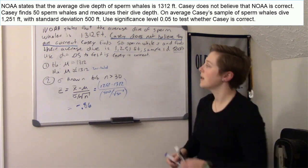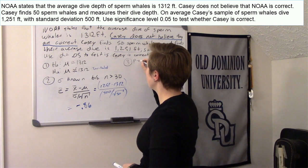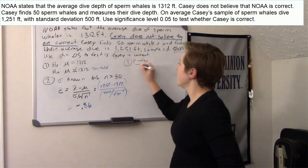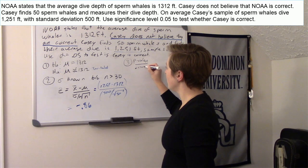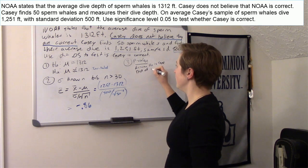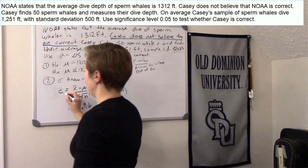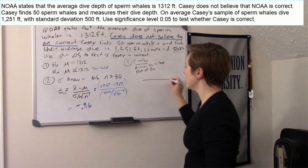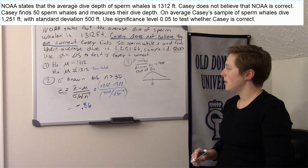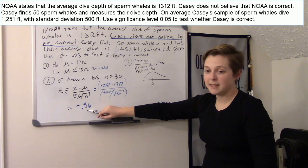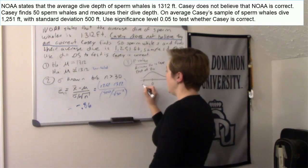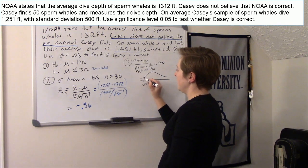Step three: p-value or critical value. I'll start with p-value in this video and do critical value in the next video using the same example. When doing a p-value, you assume H0 is true and look at the distribution of the test statistic, centered at zero. The p-value is the probability of observing a test statistic this extreme or more extreme — so to the left at negative 0.86.